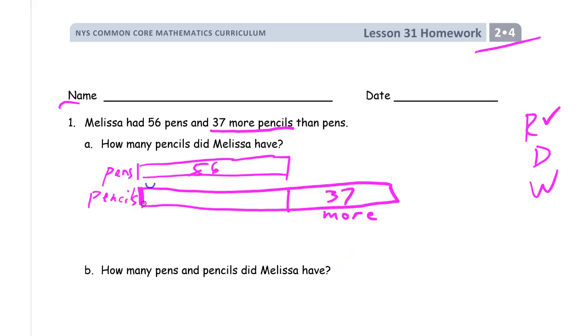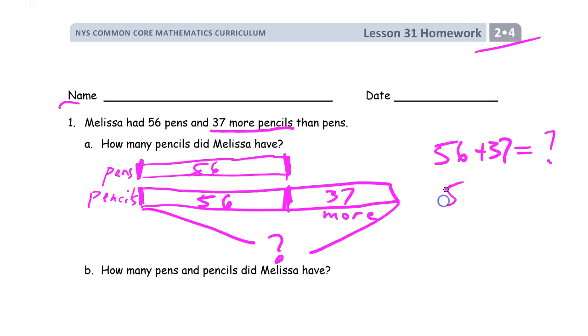Alright, so if this is 56, this part here is the same as that part there. So this has to be 56. So we need to find out what that is. 56 plus 37. We'll erase my RDW to make some room here. Equals. Here's our equation. 56 plus 37. I'm going to use vertical addition. So that's 6 plus 7. And the ones digits, that's 13. That's 3 ones and a 10. And now I add my tens digits. 3 and 5 is 8 and one more is 9. 93.